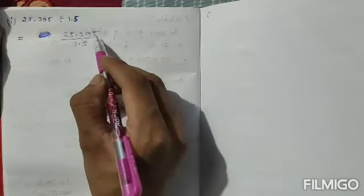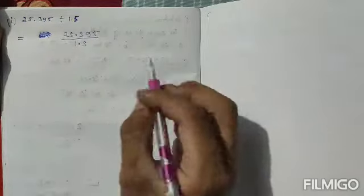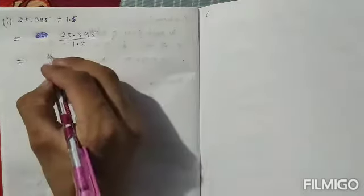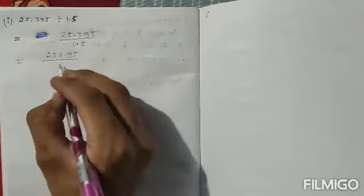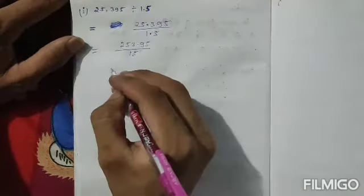In question i, we have 25.395 divided by 1.5. In the numerator we have three digits behind the decimal and in the denominator we have one digit behind the decimal. Since one is smaller, we can move one digit in front of the decimal without any problem, so this three will come in front and the remaining will be behind the decimal, making the denominator 15.